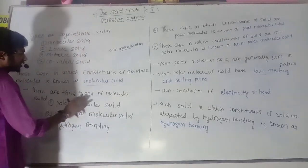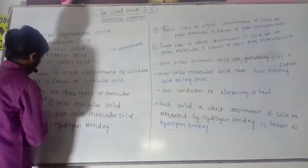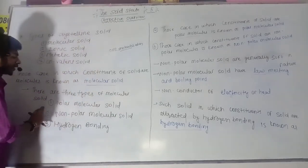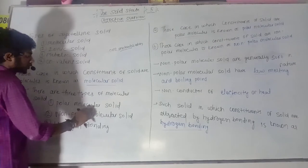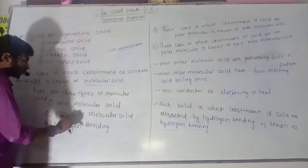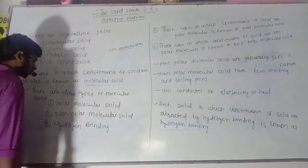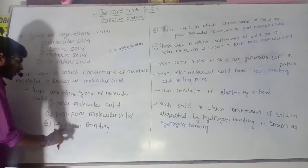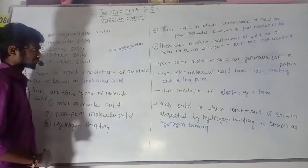There are three types of molecular solid: first, polar molecular solid; second, non-polar molecular solid; and third, hydrogen bonding molecular solid.